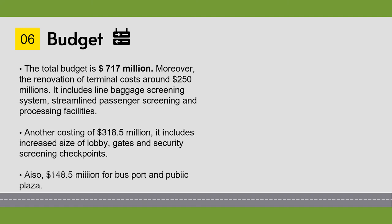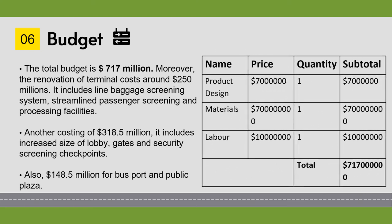The total budget of our project is approximately $171 million. The renovation of the terminal costs around $250 million, which includes baggage line screening systems and streamlined passenger screening and processing facilities. Additionally, $1,318.5 million covers the increased size of lobby, gates, security, and screening checkpoints. Another $148.5 million includes the bus port and public plaza. The connector also makes it easier for passengers to reach their connecting flights.